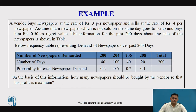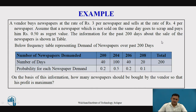Let us see with an example. A vendor buys newspapers and sells them in the market. He purchases each newspaper for 3 rupees and sells it for 4 rupees per piece. If a particular paper is unsold, he sells it as scrap. The following information is available regarding the past 200 days, and the table below represents the demand of the newspaper over the past 200 days.